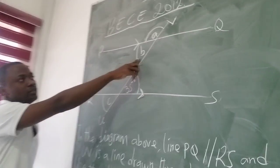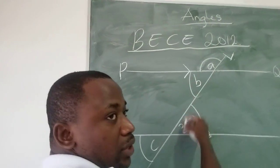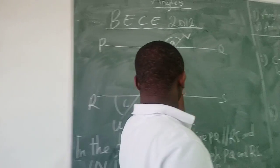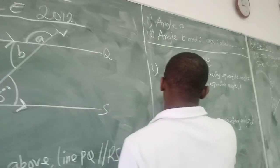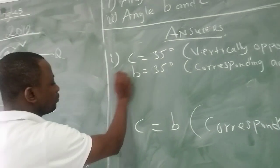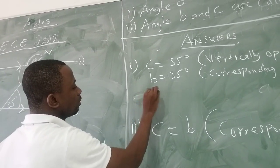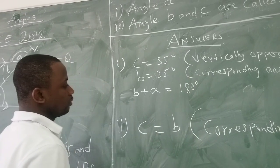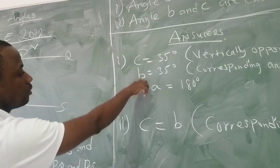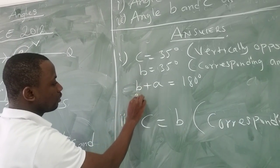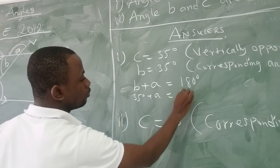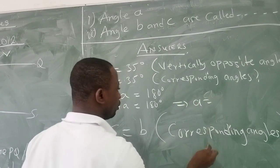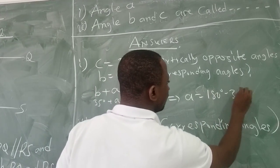Now that we know B, we've learned that angles on a straight line sum to 180 degrees. The straight line we term as the transversal line UV — so B plus A should be equal to 180 degrees. We know B is 35 degrees, so A is equal to 180 degrees minus 35 degrees.